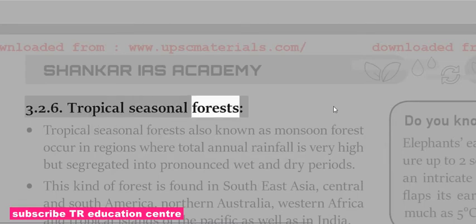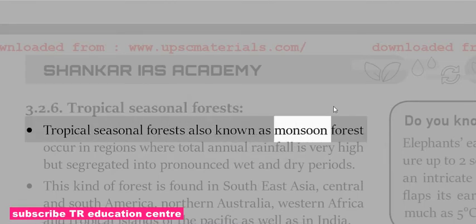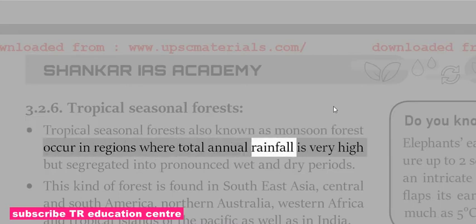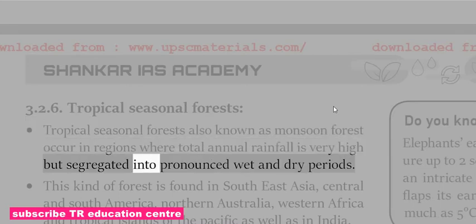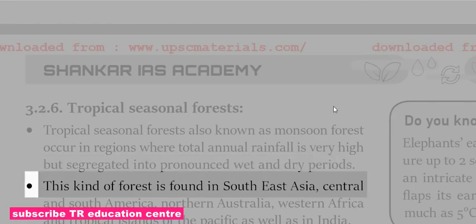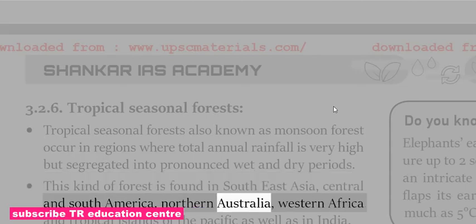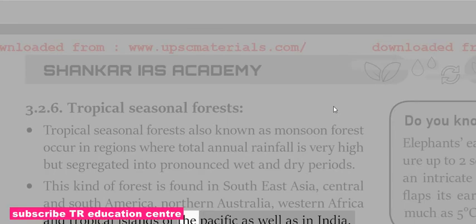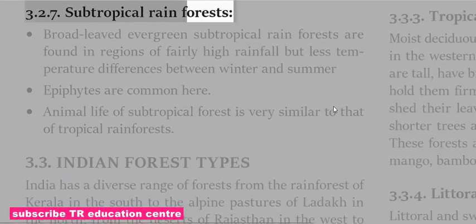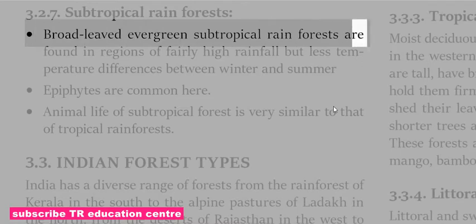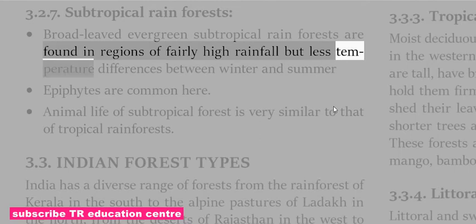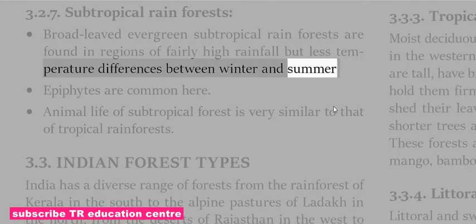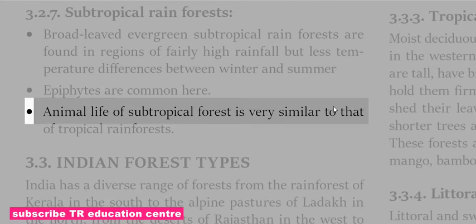Tropical seasonal forests, also known as monsoon forests, occur in regions where total annual rainfall is very high but segregated seasonally. This kind of forest is found in South-East Asia, Central and South America, Northern Australia, Western Africa, tropical islands of the Pacific, and India. Broadleaved evergreen subtropical rainforests are found in regions of fairly high rainfall with less temperature difference between winter and summer; epiphytes are common here, and animal life is very similar to that of tropical rainforests.